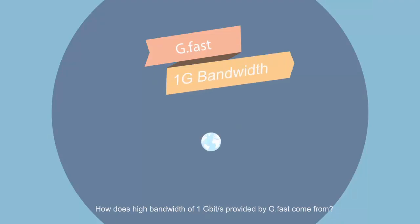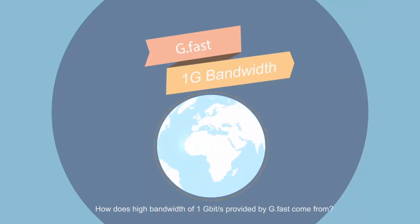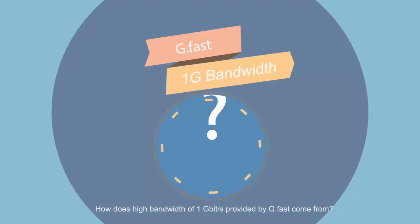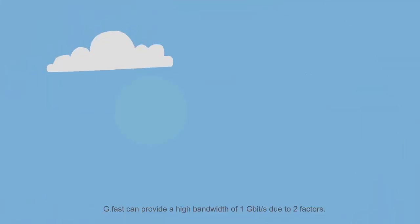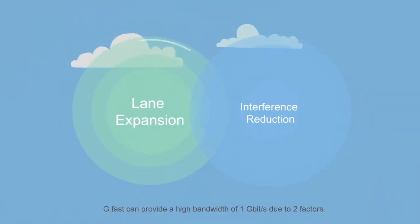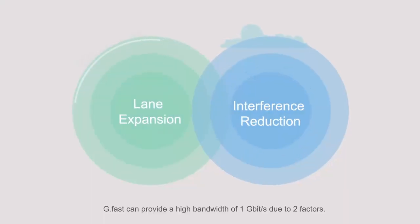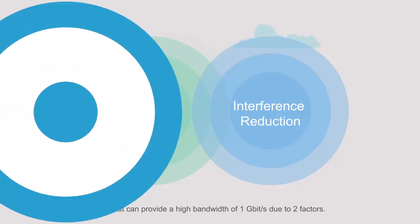How does the high bandwidth of 1 gigabit per second provided by G.Fast come from? G.Fast can provide a high bandwidth of 1 gigabit per second due to two factors.